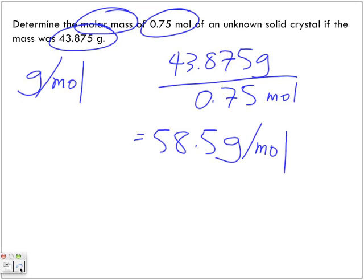58.5 grams per mole. What's the least number of significant digits in my question? Two. So my answer must be rounded down to 59. 59 grams per mole.